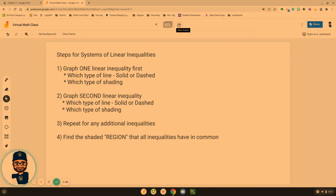Step number two is to graph the second linear inequality following the same process. Which type of line are you going to use and which region are you going to shade? Third, repeat that for any additional inequalities that you might have. A third, a fourth, a fifth one, right? We're just going to keep repeating one and two if you will.